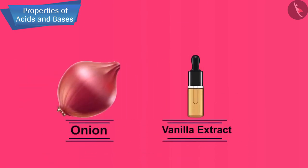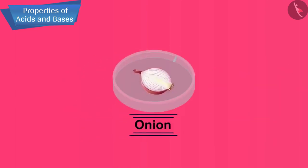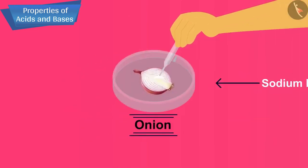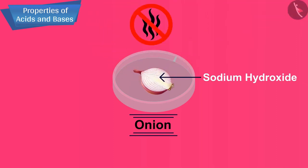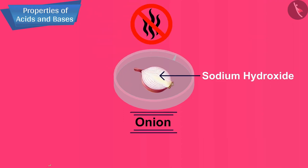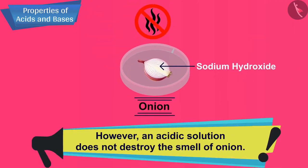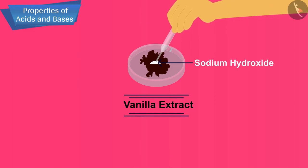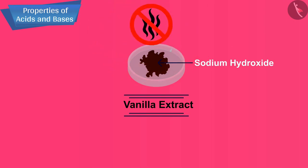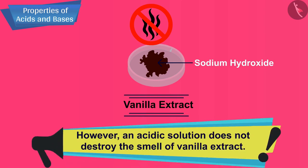Examples of olfactory indicators are onion and vanilla extract. Onion has a characteristic smell. If a basic solution like sodium hydroxide is added to onion, the onion smell cannot be detected. However, an acidic solution does not destroy the smell of onion. Vanilla extract has a characteristic pleasant smell. If a basic solution like sodium hydroxide is added to vanilla extract, we cannot detect its smell. However, acid cannot destroy the smell of vanilla extract.